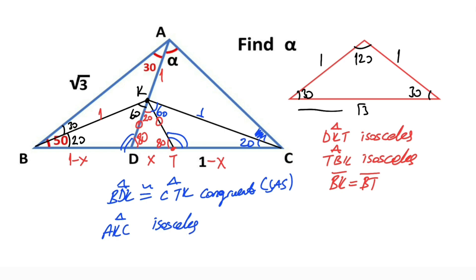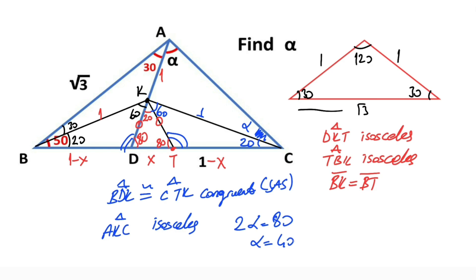Therefore this angle must equal alpha. We know that two interior angles equal one exterior angle — that means 2·alpha equals 80 degrees, so alpha is going to be 40 degrees. Thanks for watching, and if you want more videos like this, please subscribe to my channel.